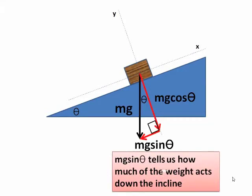Now mg sin theta tells us how much of the weight acts down the incline. mg acts directly down, but the incline dilutes the weight, allowing only a portion of it to act down the incline. And the portion that acts down the incline is mg sin theta.